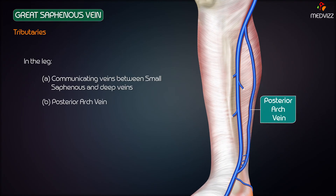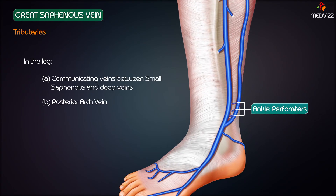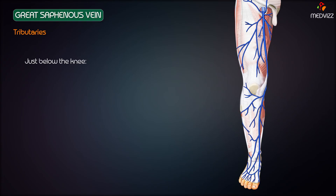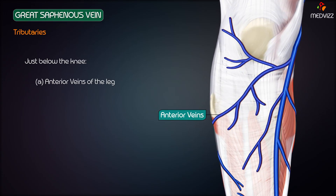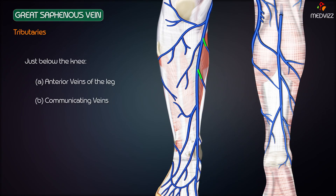The posterior arch vein is fairly large and constant. It collects blood from the posteromedial aspect of the calf and drains small venous arches connecting three medial perforating veins of the ankle, known as ankle perforators. Just below the knee, the anterior vein of the leg is an important tributary which extends diagonally upwards, forwards, and medially across the shin to join the great saphenous vein. There are also smaller veins arising from the calf which communicate with the small saphenous vein.